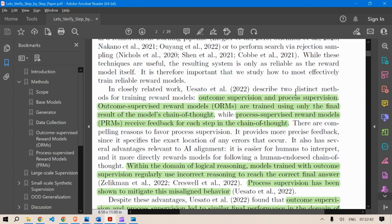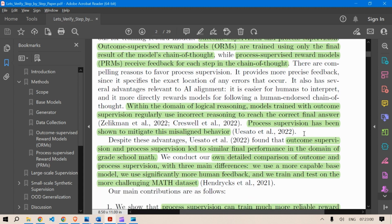Now, outcome supervision and process supervision are the two things that we're talking about. Outcome supervised reward models, or ORMs, are trained using only the final result of the model's chain of thoughts, while process supervision reward models receive feedback for each step in the chain of thought. This is understood.